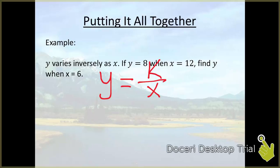And that type of model is y equals k over x. Alright so since y is 8 we have 8 is equal to k over x which is 12. And we find out that k is equal to 96. So that's our first step.